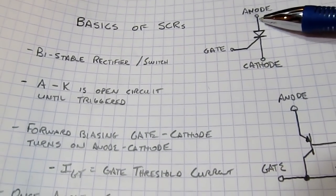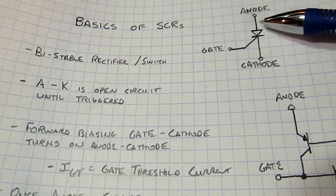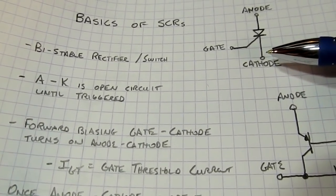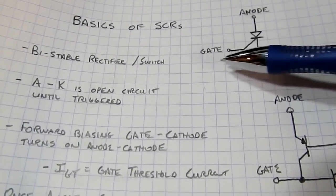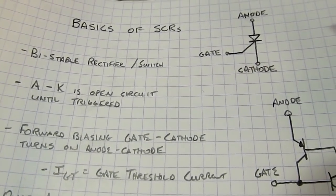And then once the anode-to-cathode current reaches a certain value, which is often called the latching current, then the device will stay on, even if the gate voltage and the bias is then removed.